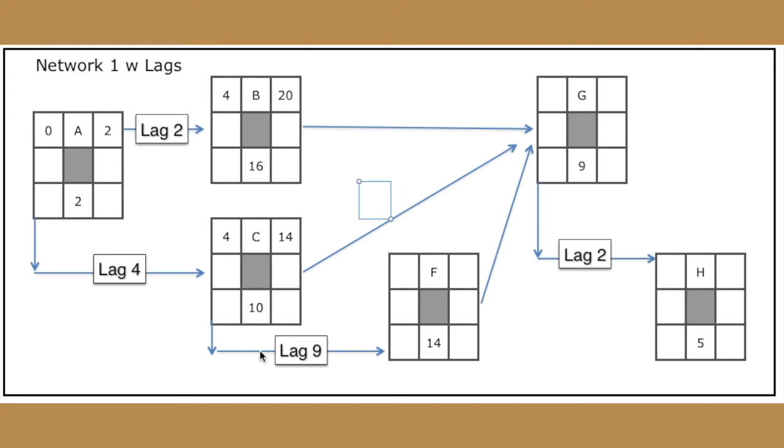F also has a start-to-start relationship, this time with C. So in this case, F can start nine days after C starts. So what we're going to do is we're going to take this four, we're going to add nine to it, which we should come up to something around 13. And then we can do our normal calculation here, adding the duration, we should get something around 27 for the early finish.